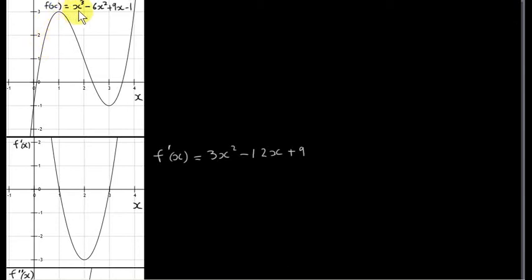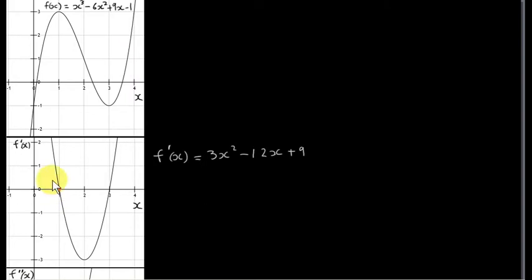Here we have a graph of the function x cubed minus 6x squared plus 9x minus 1. Down here we have a graph of the derivative of this function, f prime of x. We differentiate this function and get 3x squared minus 12x plus 9. This graph gives us the slopes of tangents to the graph of f of x. For example, at x equals 1, we see that f prime of x is 0, and at x equals 1 on this graph, the slope of the tangent is 0 — the tangent is a horizontal line.